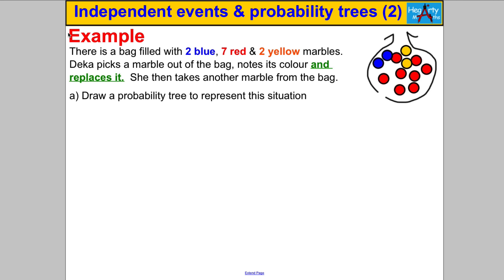Next question. This is an example of taking marbles out of a bag, but this time there are three types of marble. Pause the video and double check you can draw the probability tree. I'm going to go ahead and draw that for you now. Just know that there are 11 marbles in the bag in total.